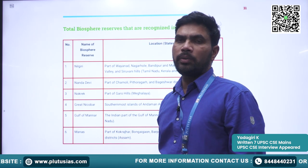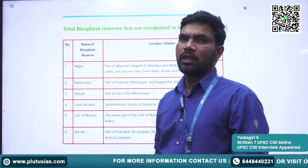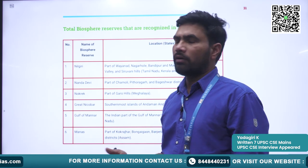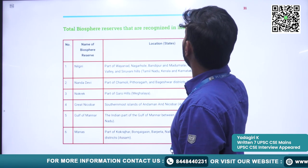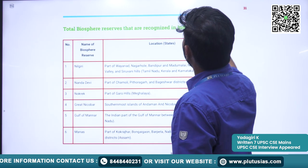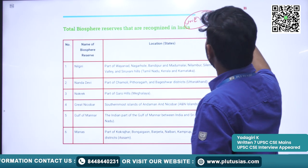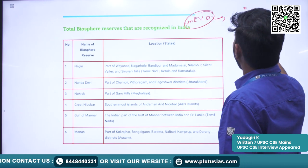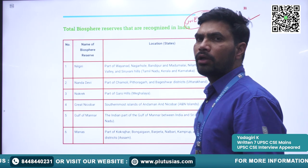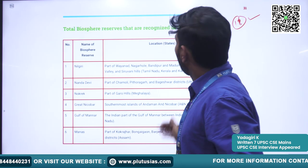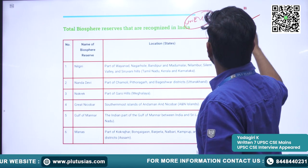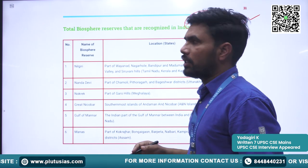These are the 12 Biosphere Reserves under the protection of UNESCO. However, the Indian government has recognized 18 Biosphere Reserves. The particular 12 are part and parcel of these 18.